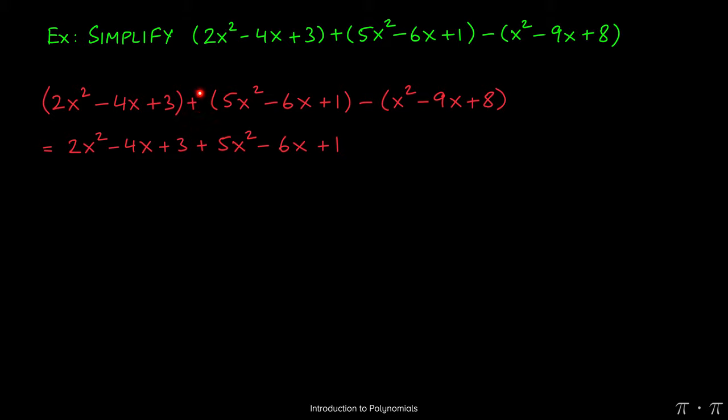Because of this positive sign, when we distribute, all the terms retain their original signs. However, when this negative is distributed to these three terms, the signs must change. So the positive x squared flips to a negative x squared. The negative times a negative will yield a positive 9x. And finally, a negative times the positive 8 will yield a negative 8.